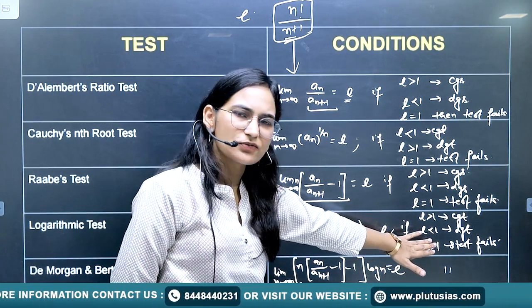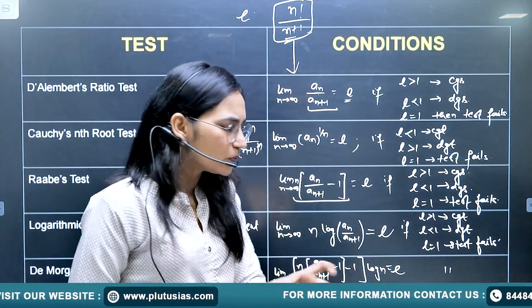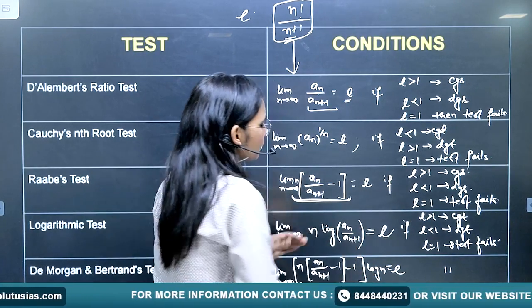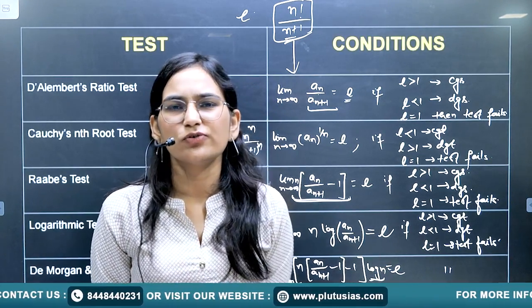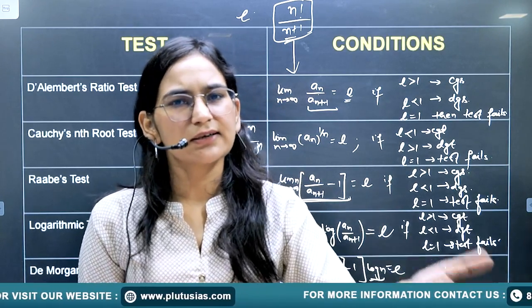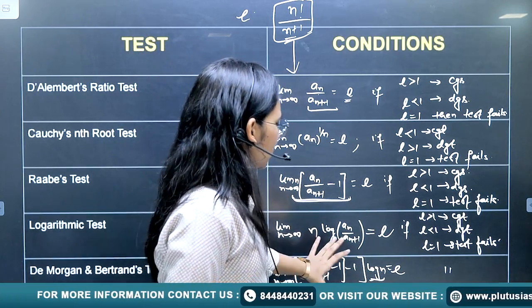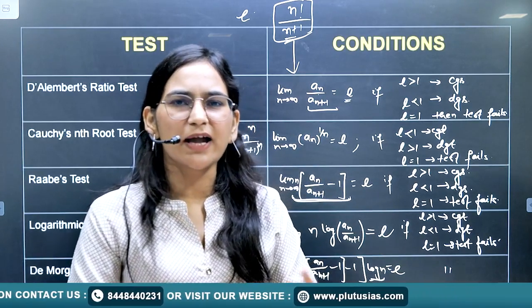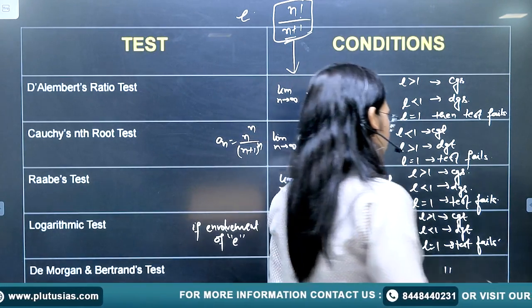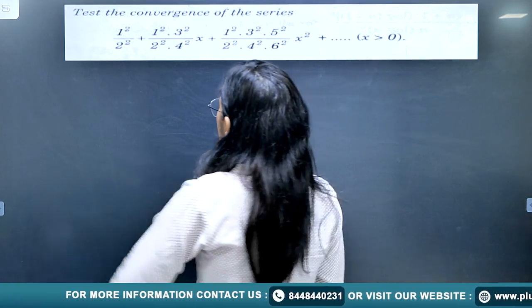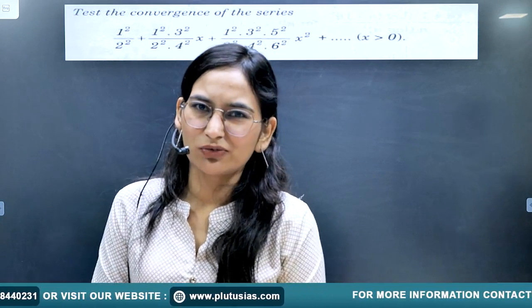If the Logarithmic Test also fails (l = 1), we proceed to De Morgan and Bertrand's Test. Starting from the failure of Raabe's Test, subtract 1, multiply by log n, and take the limit. If l > 1 the series is convergent, if l < 1 the series is divergent, and if l = 1 the test fails again. Now let's see how to apply all of these through an example: the series is 1²/(2²) + (1²·3²)/(2²·4²) + ...